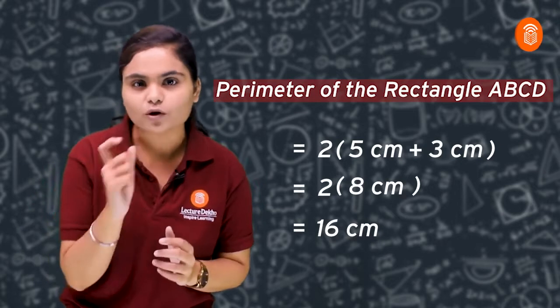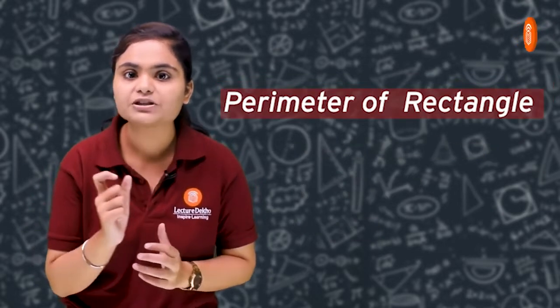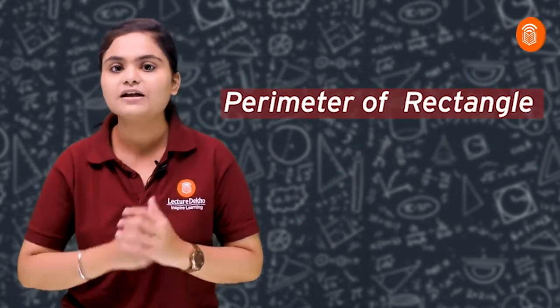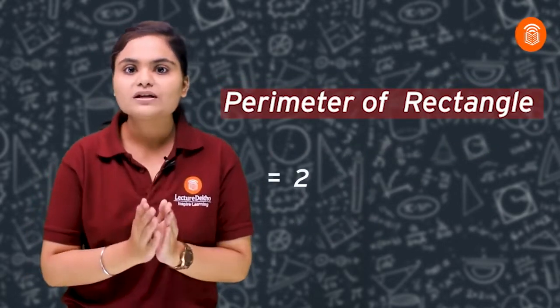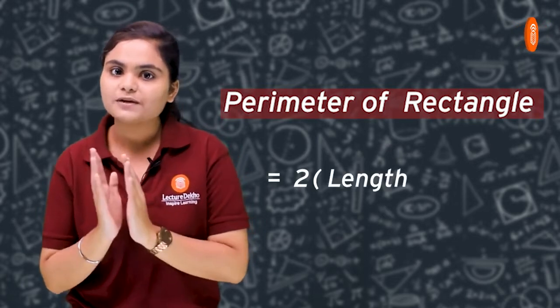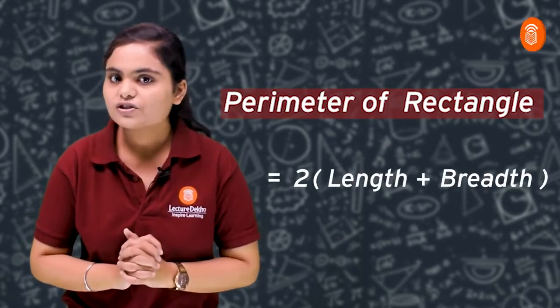Students, we have a formula here. What is the formula for the perimeter of a rectangle? 2 times (length plus breadth).